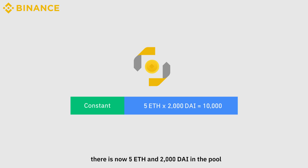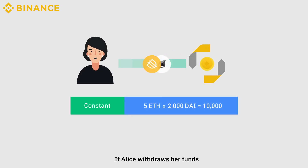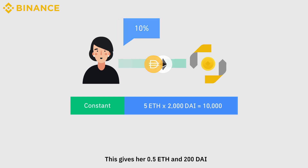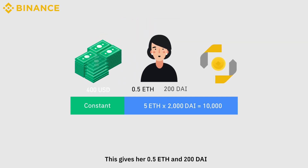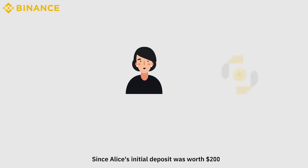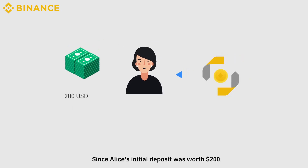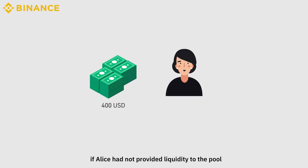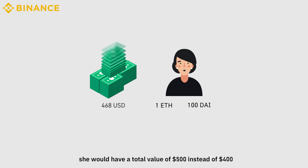Due to the work of traders, there is now 5 ETH and 2,000 DAI in the pool. If Alice withdraws her funds, she's still entitled to her 10% share of the pool. This gives her 0.5 ETH and 200 DAI, totaling $400. Since Alice's initial deposit was worth $200, she made some nice profits. However, if Alice had not provided liquidity and simply held her 1 ETH and 100 DAI, she would have a total value of $500 instead of $400.